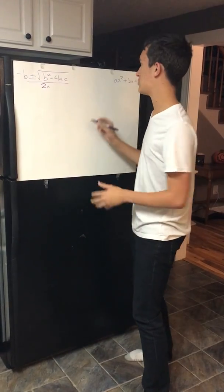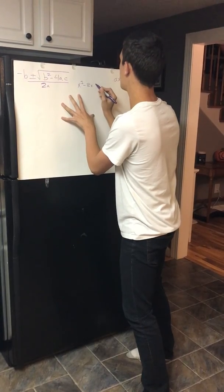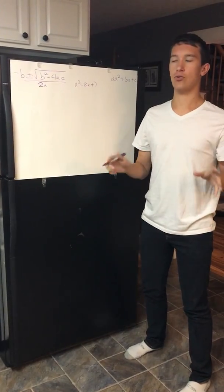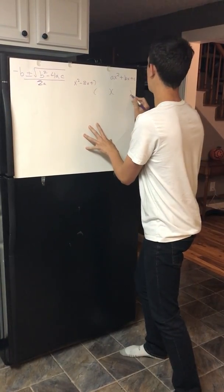So for factoring, we're going to take an equation. We're going to take x squared minus 8x plus 7. So we're factoring. The key is cross-multiplying, so you want to set up two parentheses, all right?